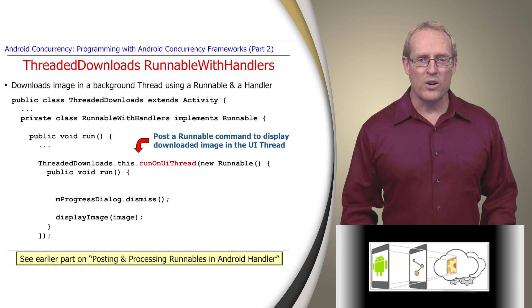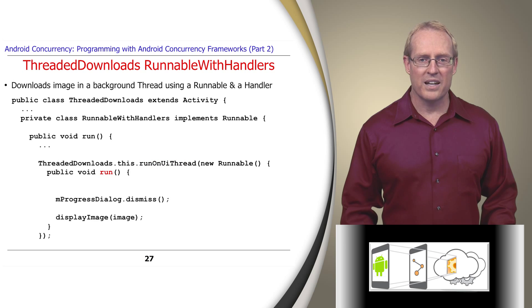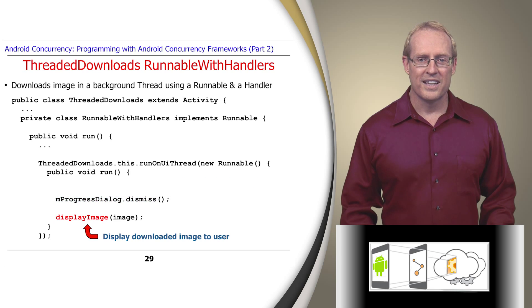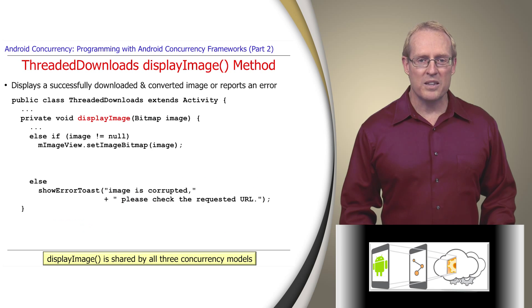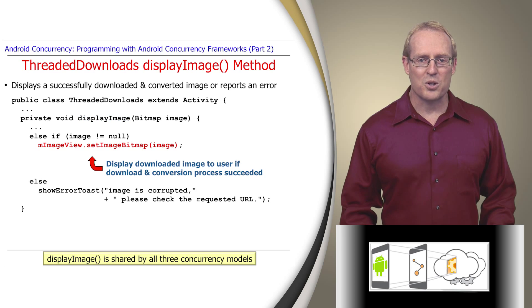The Run Hook method of this command dismisses the progress dialog and calls the Display Image method. This method is shared by all three concurrency models. It shows the image on the screen if the download and conversion process succeeded.